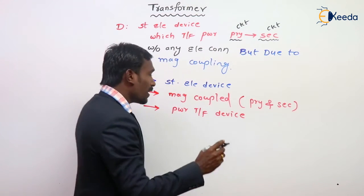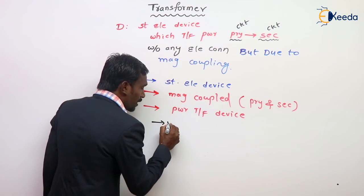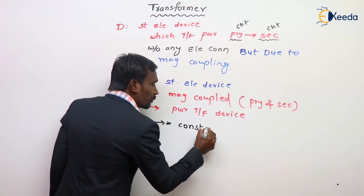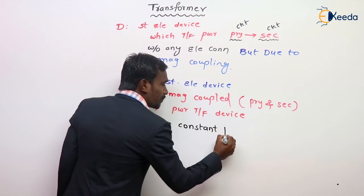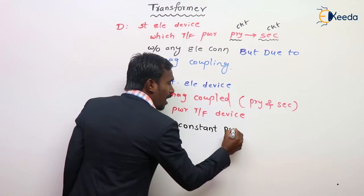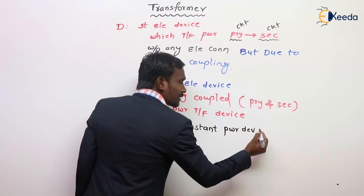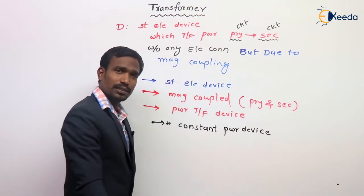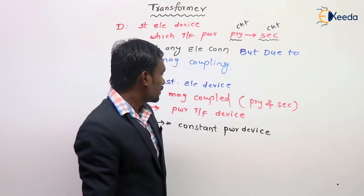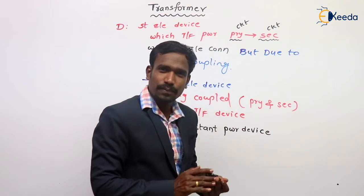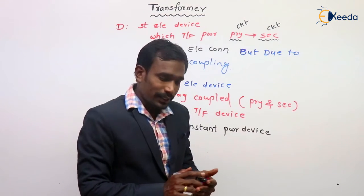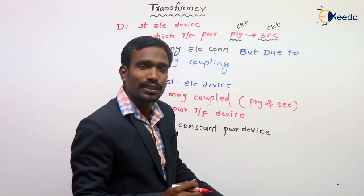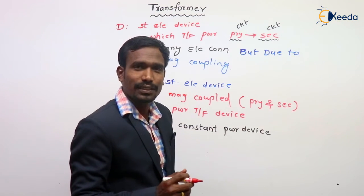This transformer is also a constant power device. What is the meaning of this statement?